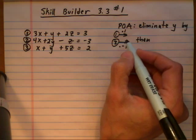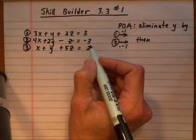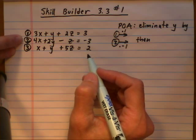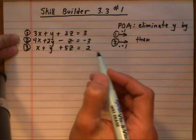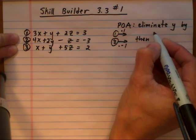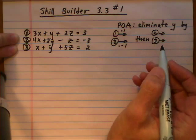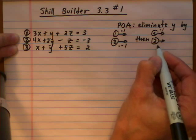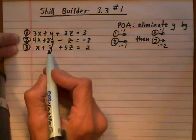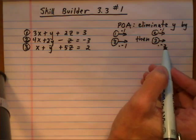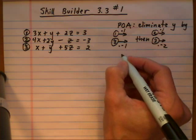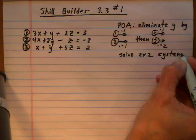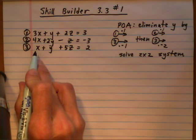We'll add those two together and get rid of y. Then we're going to get rid of y again using two other equations — it can't be 1 and 3 again; we have to do either 1 and 2, or 2 and 3. Let's use 2 and 3. We'll leave equation 2 as is and multiply equation 3 by negative 2 because we want to have minus 2y. You always have to eliminate the same variable in both steps, so the resulting 2×2 system will have the same two variables — in this case, x and z.